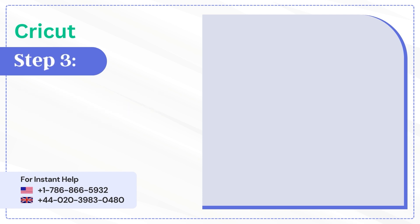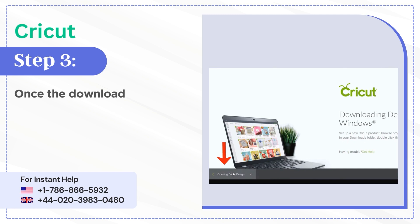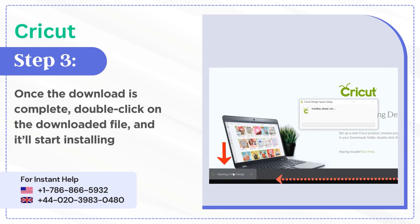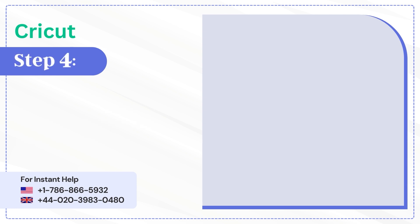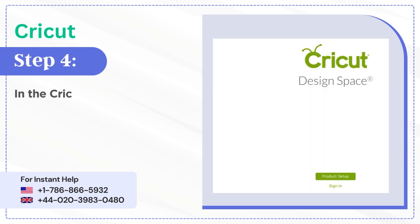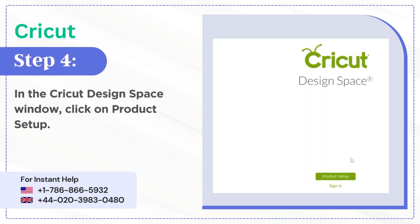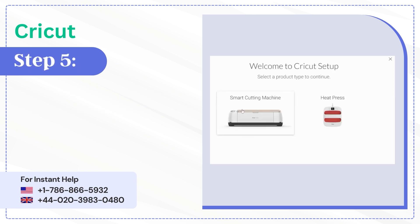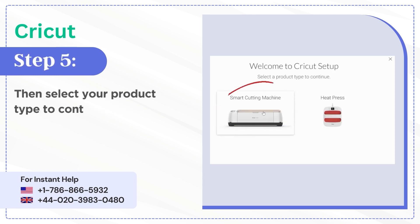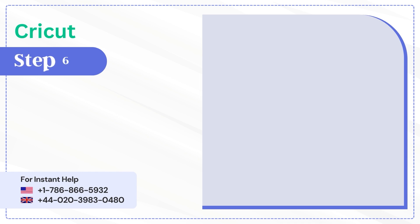Step 3: Once the download is complete, double-click on the downloaded file and it'll start installing. Step 4: In the Cricut Design Space window, click on Product Setup. Step 5: Then select your product type to continue.